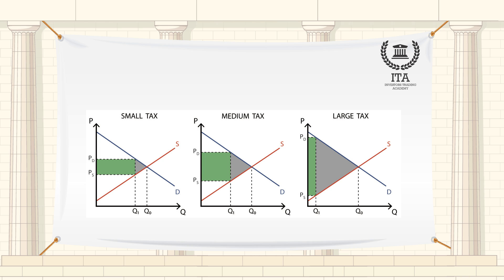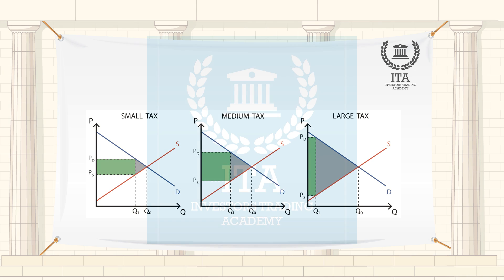For example, if a certain tax is imposed on the producer for each unit of the good he sells, it is likely that the new equilibrium price settled for the transaction will be higher, and therefore some burden of this will be passed on to the consumer.